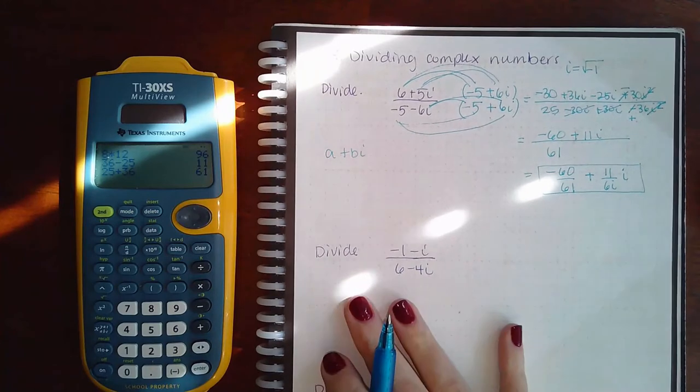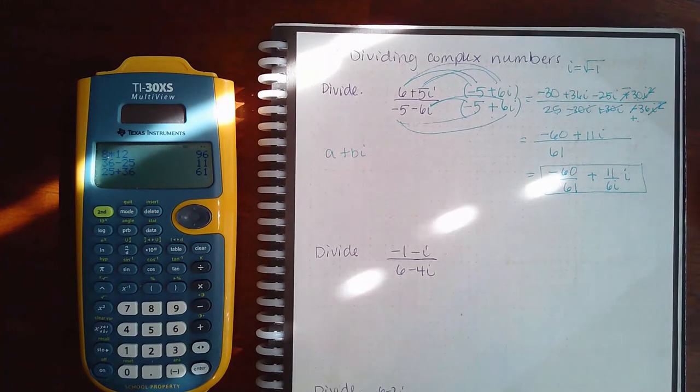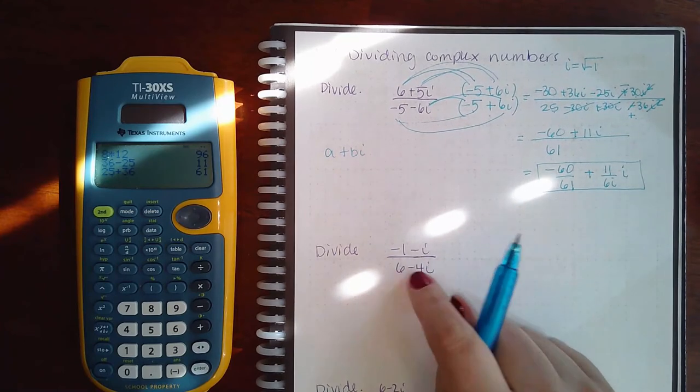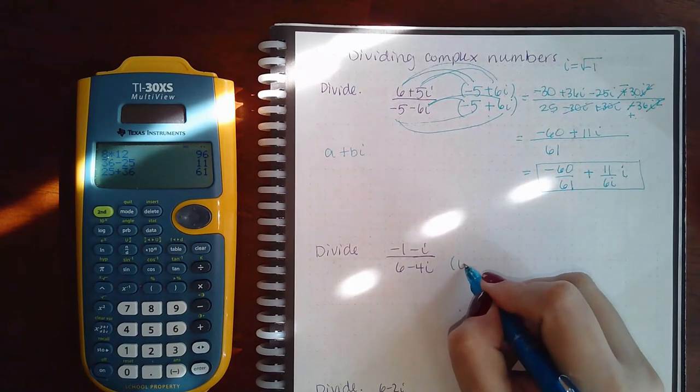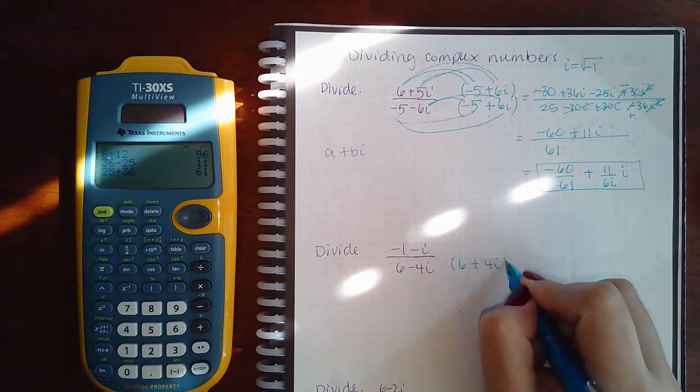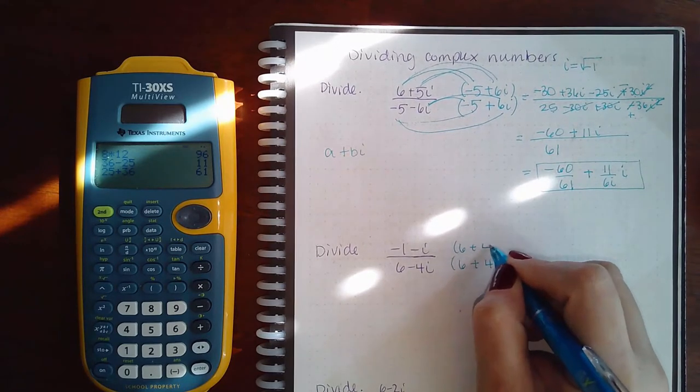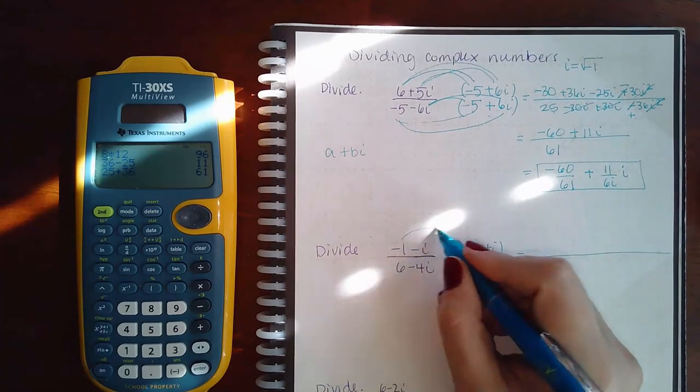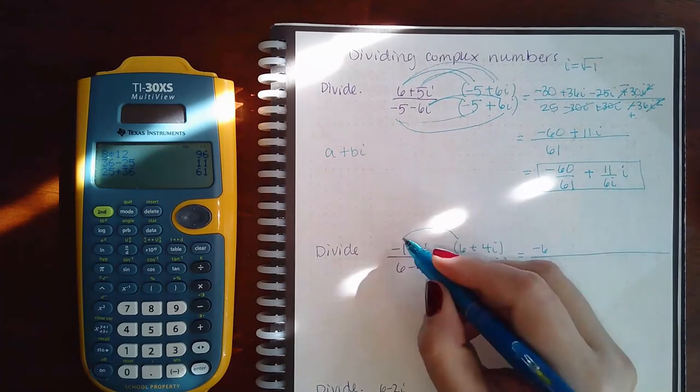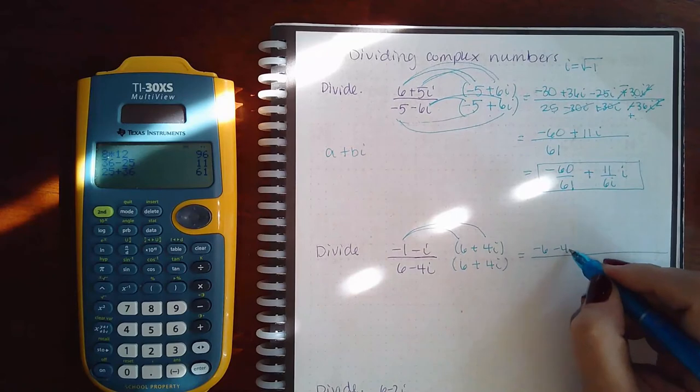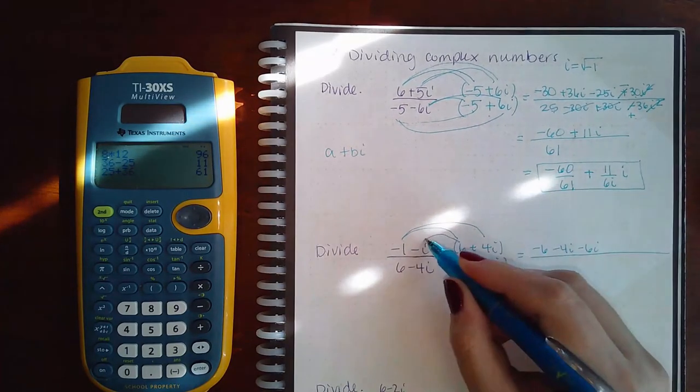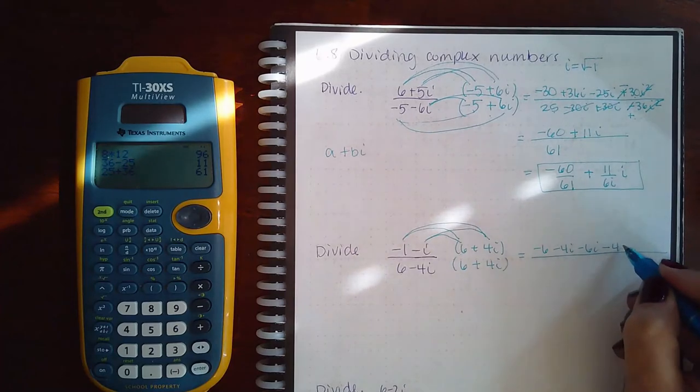Similarly, I have to rationalize the denominator. And because it's a binomial, I'm going to use the conjugate. So I'm going to use 6 plus 4i on the bottom and also on the top. Then I'm going to FOIL this one out. So that becomes negative 6, negative 4i, negative 6i, and then negative 4i squared.